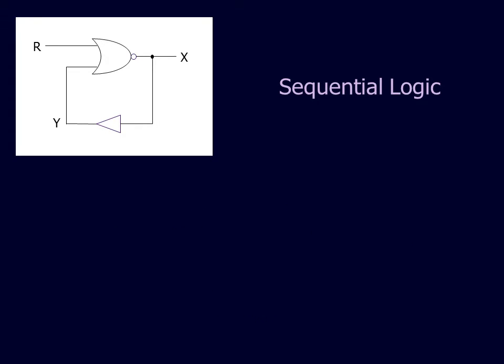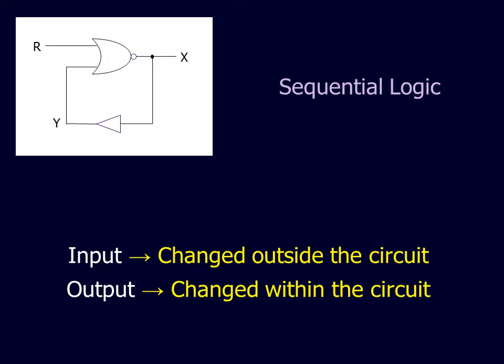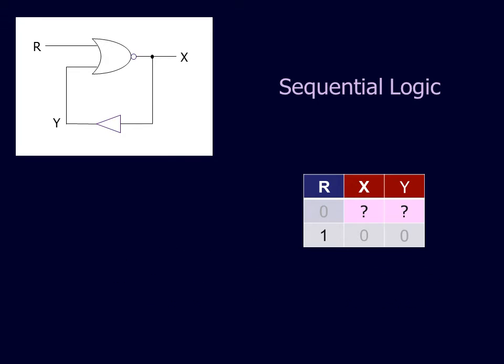The use of feedback tends to obscure the definitions of inputs and outputs. However, we maintain that inputs are parameters that can be changed outside the circuit, whereas outputs can only be changed within the circuit. It is often difficult to use a truth table to study sequential logic.